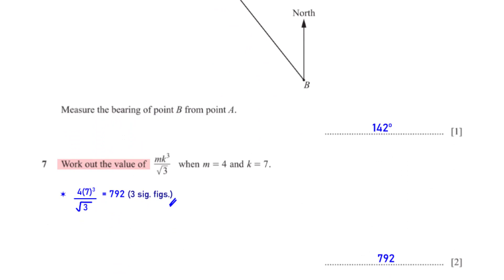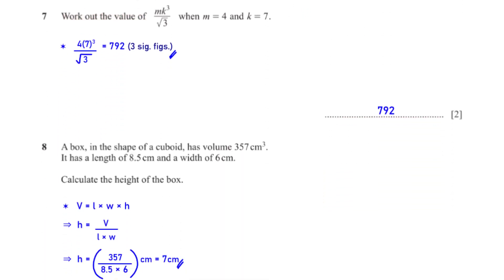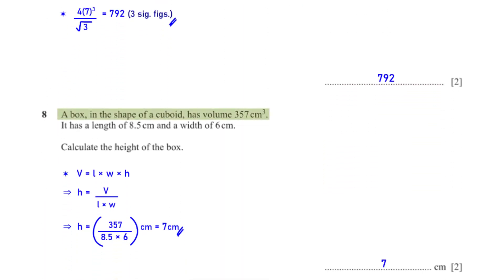Work out the value of mk³ over square root of 3 when m is 4 and k is 7. When we plug in the values of m and k into the given expression we have 4 times 7 cubed divided by square root of 3, which is equal to 792 rounded to 3 significant figures.